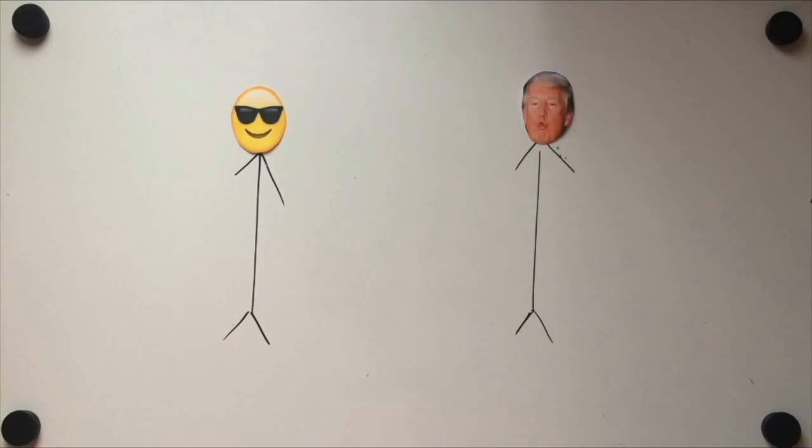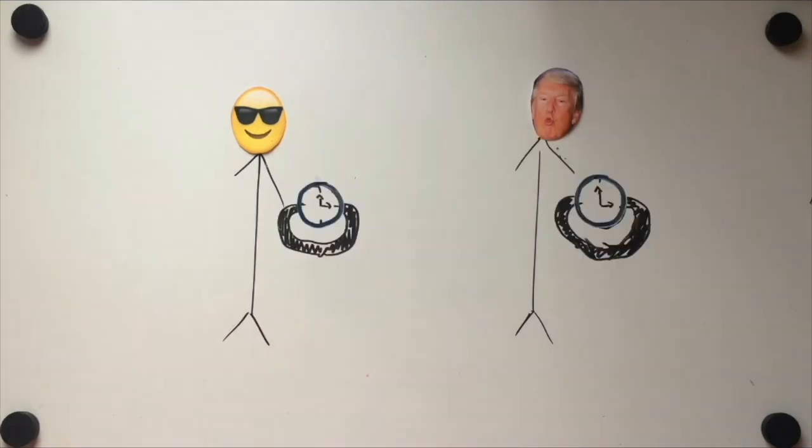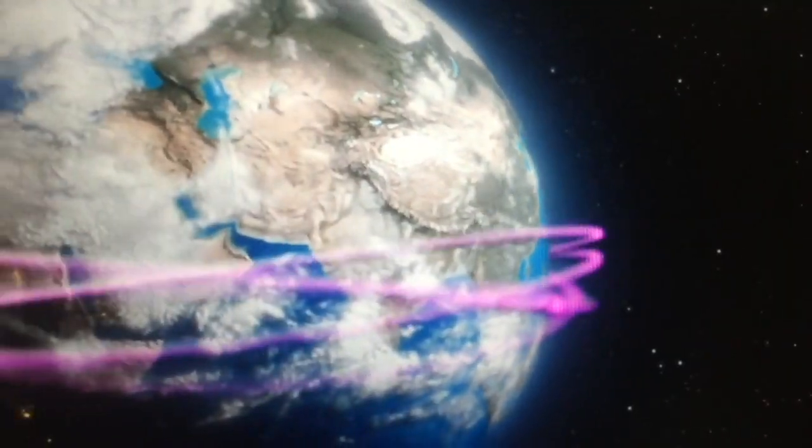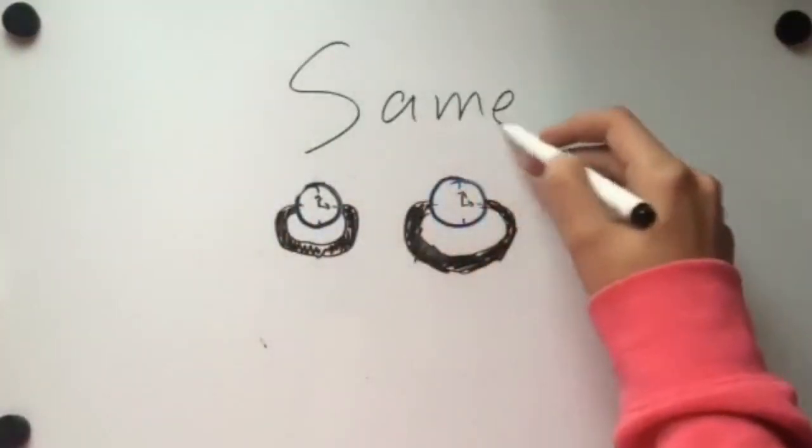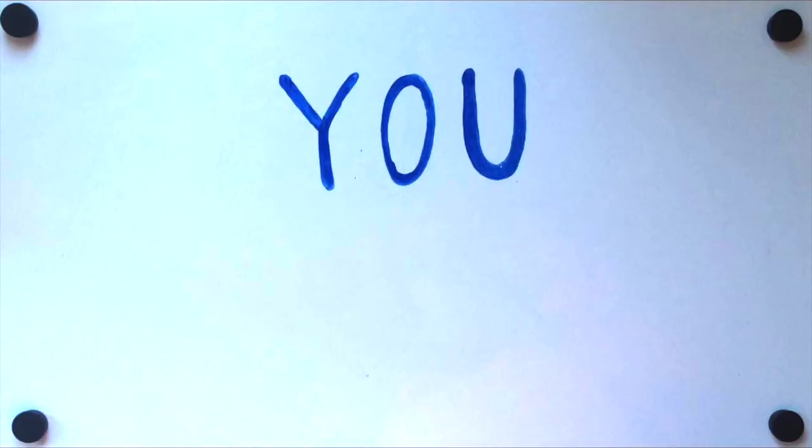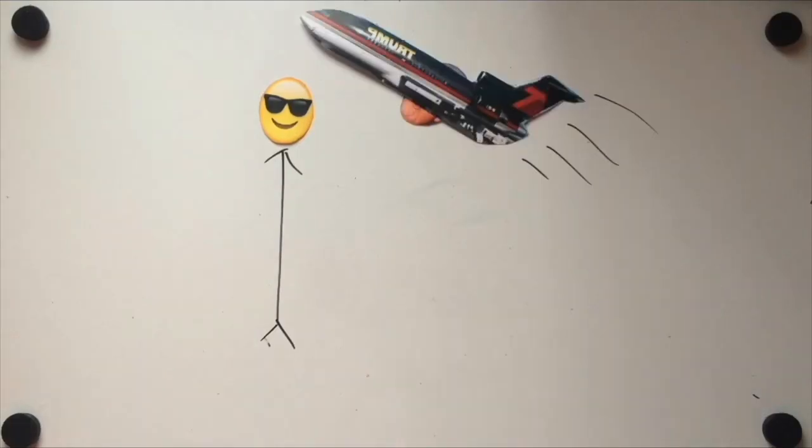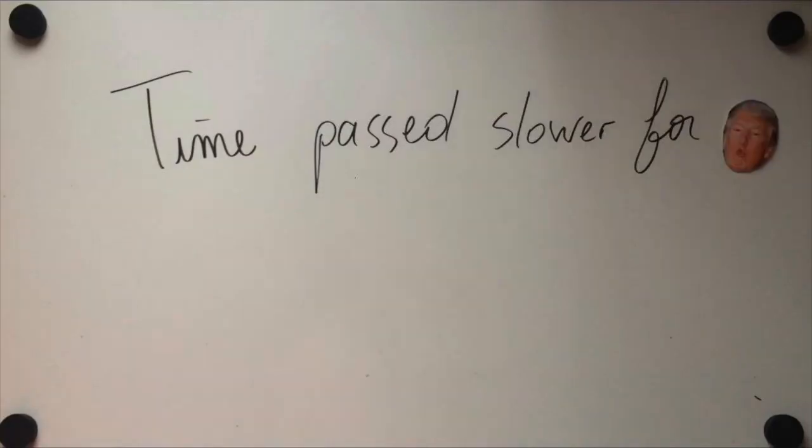that if you and your friend Donald had two perfectly synchronized clocks, and Donald traveled on his private jet around the earth and came back, he would still have the same time on your clocks. But actually, you won't. Because Donald was traveling at a certain speed while you weren't, time has actually passed slower for him than for you.